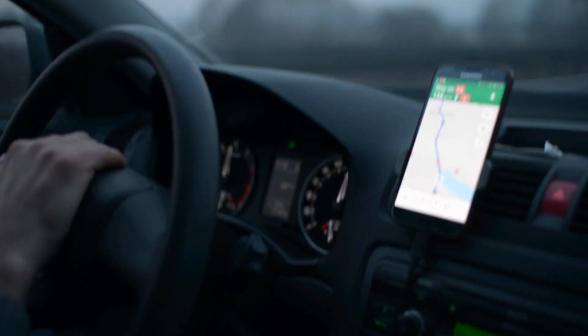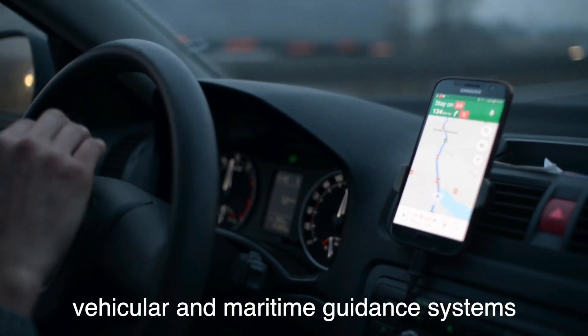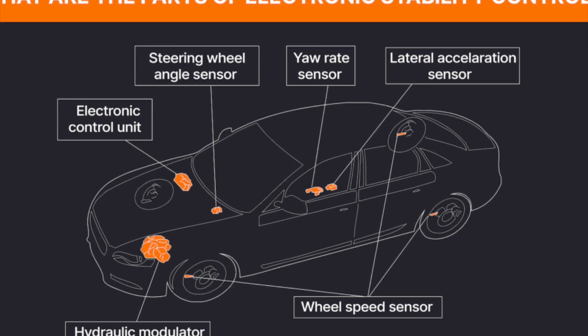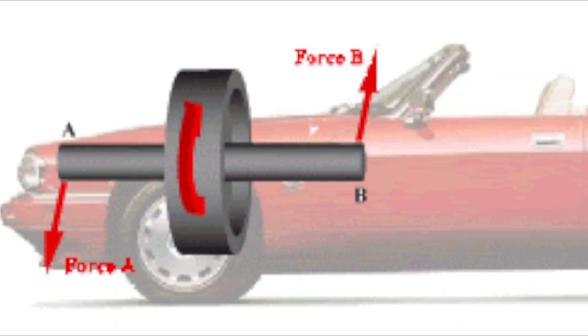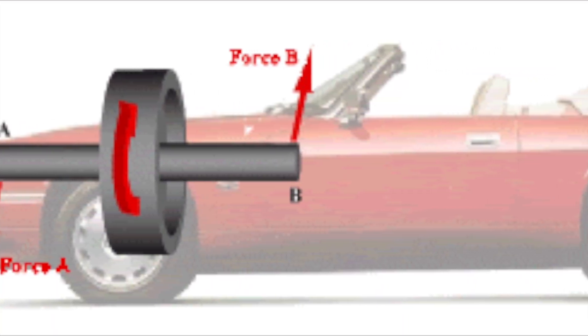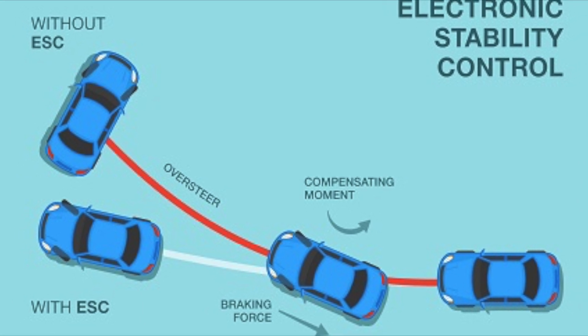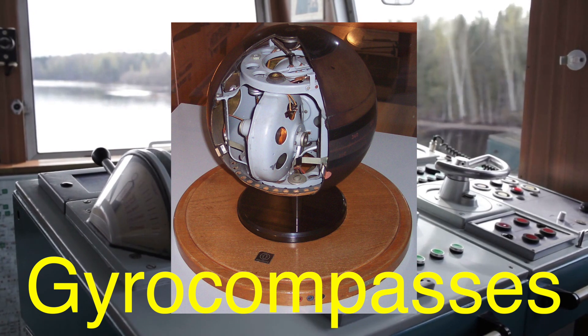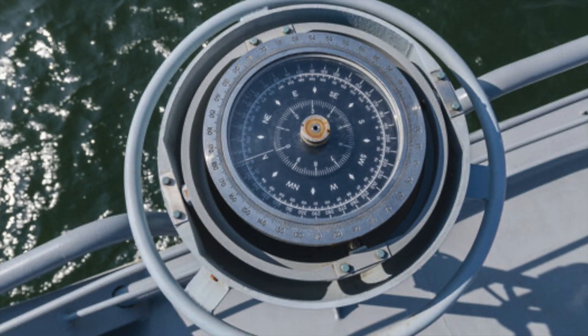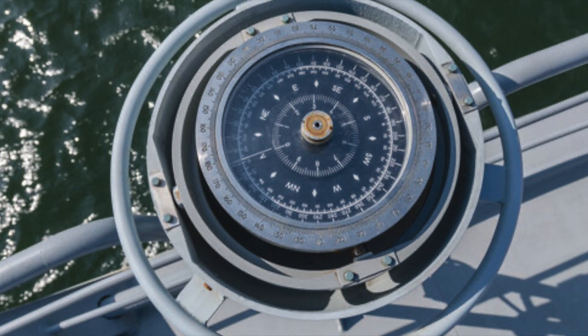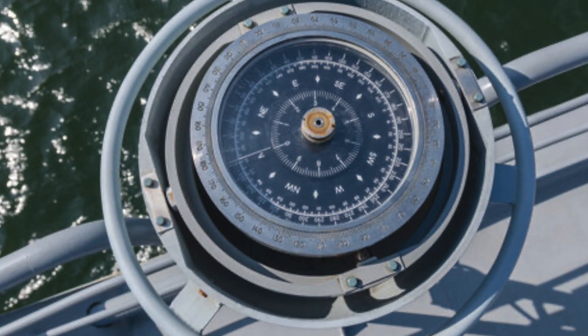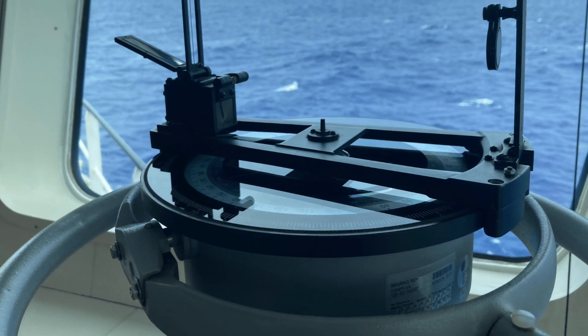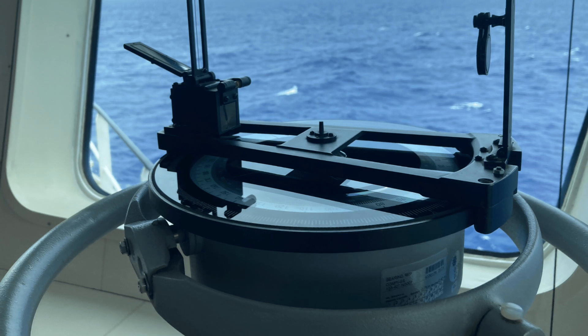In the world of navigation, gyroscopes are vital for both vehicular and maritime guidance systems. In cars, gyroscopic sensors help with electronic stability control, ESC systems, ensuring that the vehicle remains stable during turns and sudden maneuvers. On ships, gyrocompasses use the principles of gyroscopic motion to find true north, which is essential for accurate navigation. Unlike magnetic compasses, which can be affected by nearby metal objects or magnetic fields, gyrocompasses maintain a consistent and reliable direction based on the rotation of the Earth.